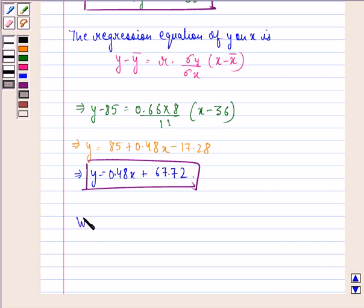We see that when x is equal to 30, then we put this in the above equation and this implies that y is equal to 0.48 into 30 plus 67.72.